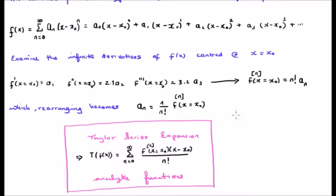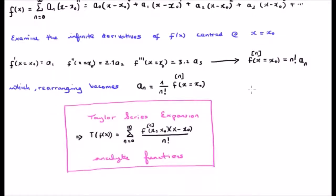This allows us to rewrite the power series as the Taylor series expansion which is written towards the bottom of your screen. Note, by the way, this only works for analytic functions, functions which are infinitely differentiable. They don't have zeros and they don't have poles. That was pretty straightforward.